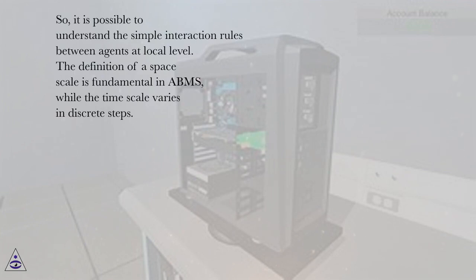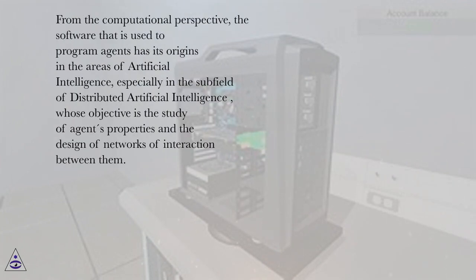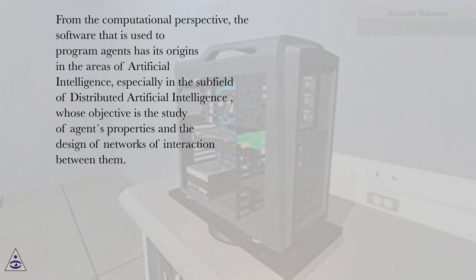It is possible to understand the simple interaction rules between agents at the local level. The definition of a space scale is fundamental in ABMS, while the timescale varies in discrete steps. From the computational perspective, the software used to program agents has its origins in the areas of artificial intelligence, especially in the subfield of distributed artificial intelligence, whose objective is the study of agents' properties and the design of networks of interaction between them.